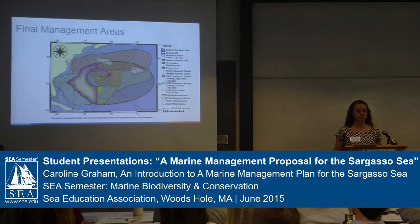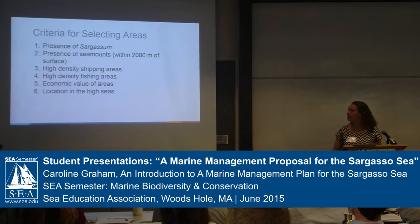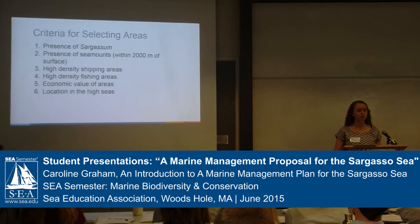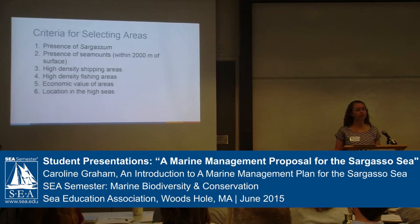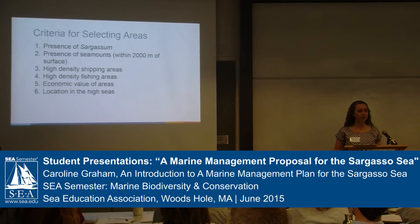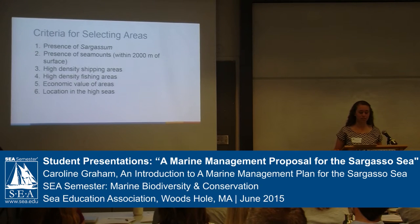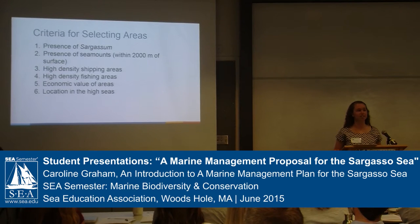With these goals and objectives in mind, we selected management areas based on a series of criteria. These criteria include the presence of Sargassum and seamounts, as these are two very important ecosystems in the Sargasso Sea. We also looked at human uses — areas with high-density fishing and shipping traffic — as well as the economic value of areas based on fisheries landings, and the location of areas in the high seas or beyond national jurisdiction. We have also made recommendations for Bermuda's exclusive economic zone.